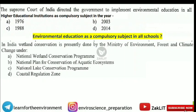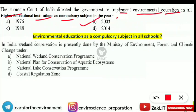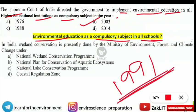The next question: 'The Supreme Court of India directed the government to implement environmental education in all higher educational institutions as a compulsory subject in which year?' The answer is 2003. Additionally, environmental education as a compulsory subject in schools was declared in 1991. So: schools — 1991; higher education institutions — 2003.